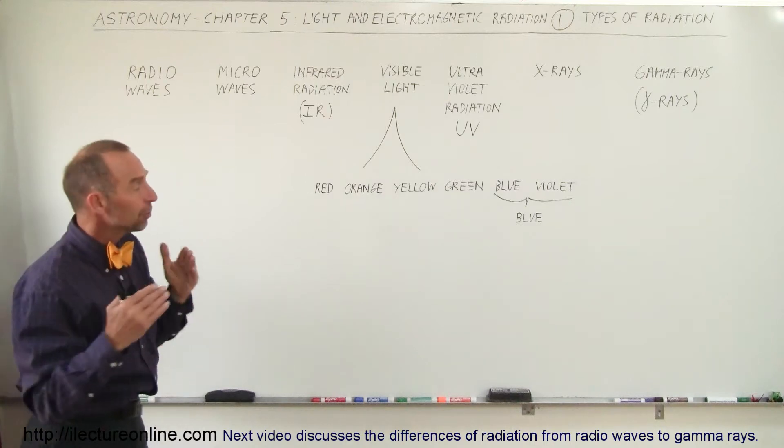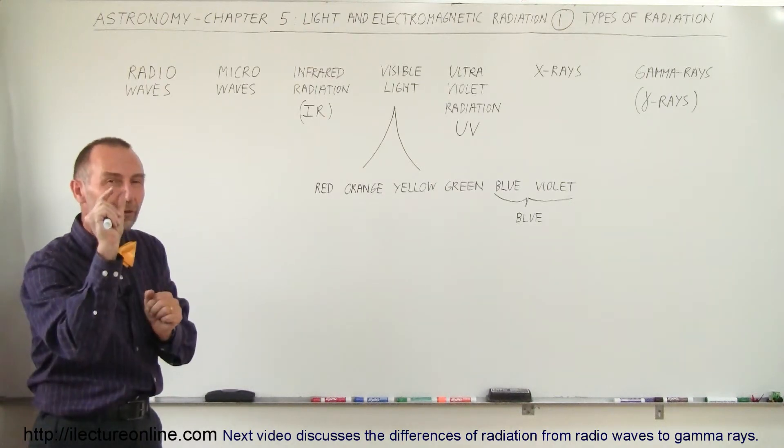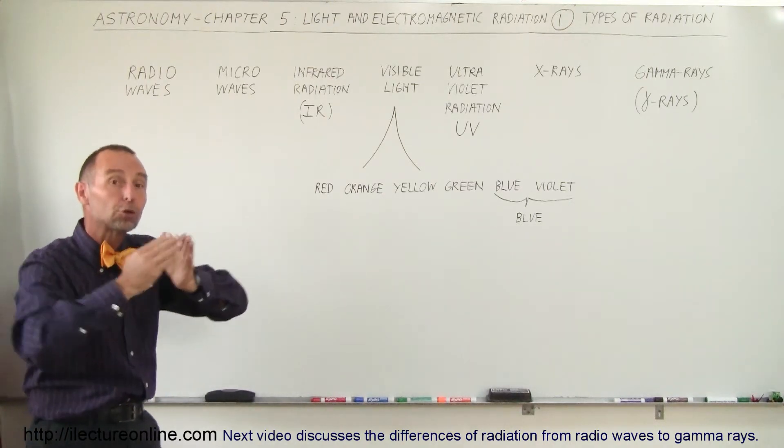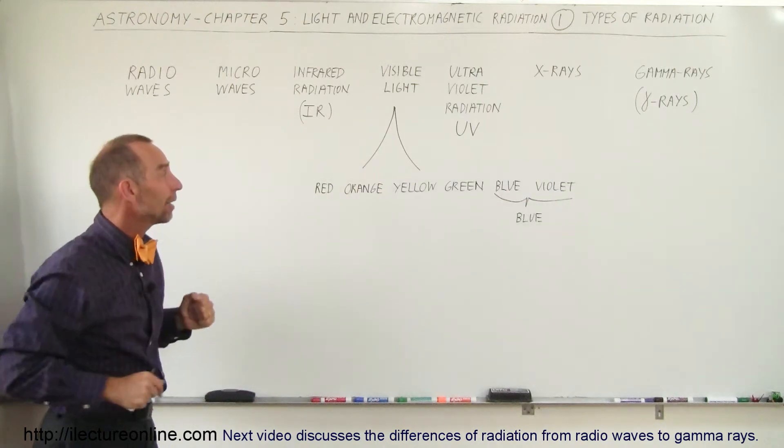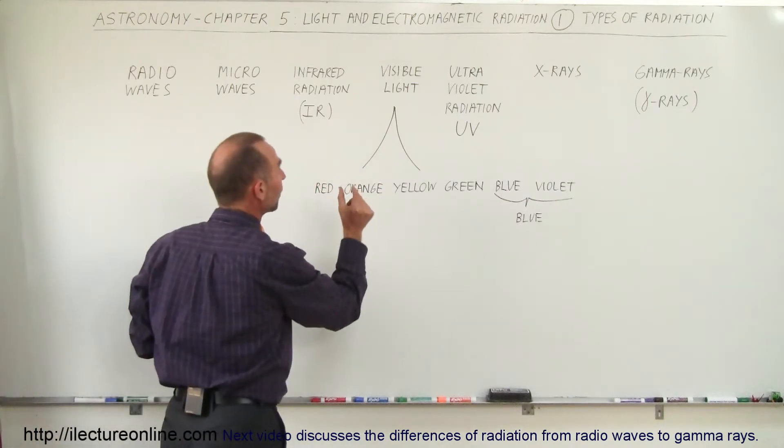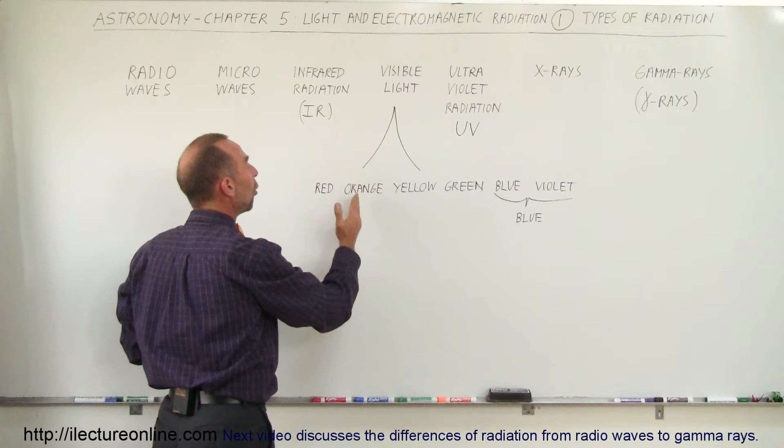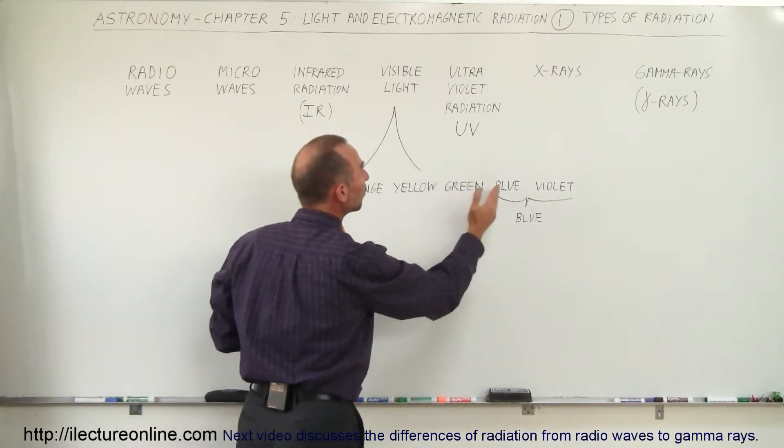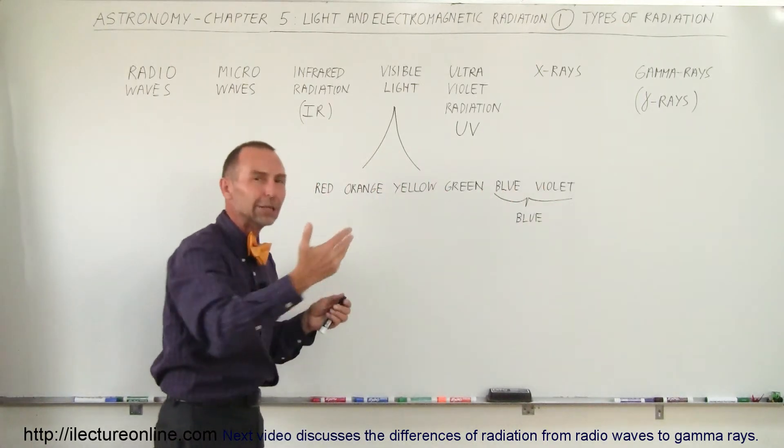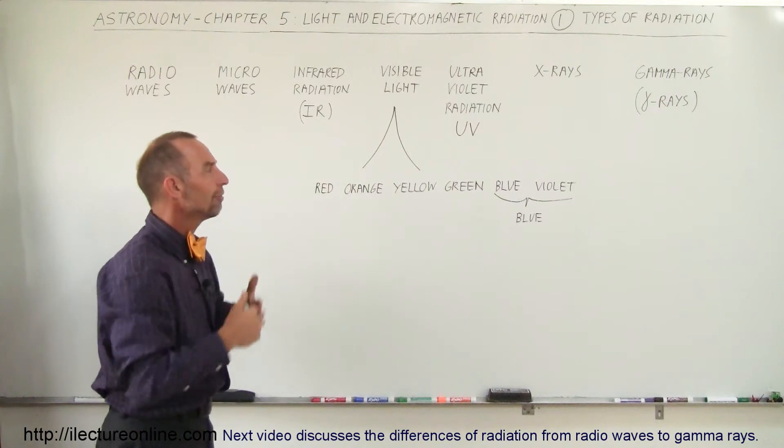And for the visible light range, even though it's only a very small portion of the total electromagnetic radiation band, in that small portion of visible light, we have the colors red, orange, yellow, green, blue, and violet.